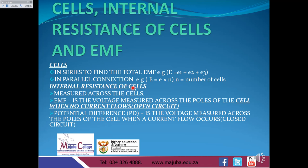The internal resistance of cells is measured across the cells. EMF is measured across the poles of the cells when there is no current flowing through, which means that it will be in an open circuit, whilst the potential difference is the voltage measured across the poles of the cells when there is current flowing, which means that it will be in a closed circuit.